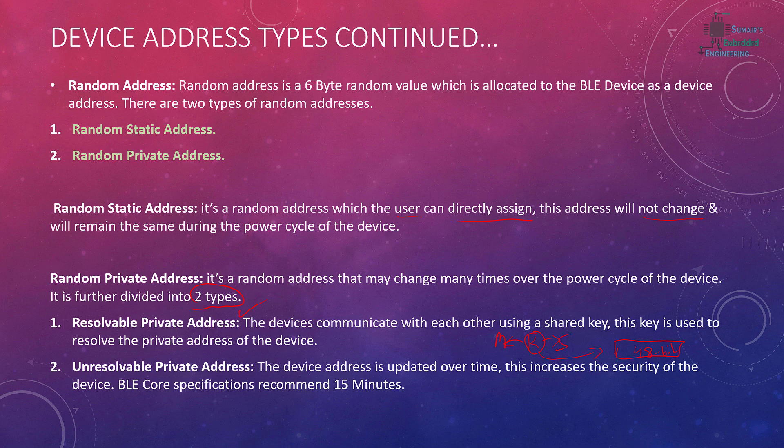The second type is the unresolvable private address. Nobody can track the device because it keeps changing its address. The BLE core specification says the address can change up to every 15 minutes, or even every 15 seconds — it depends on your application. This is typically used only in special applications requiring tough security.